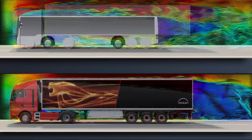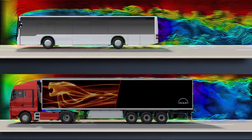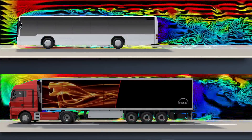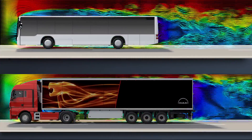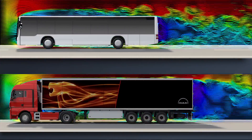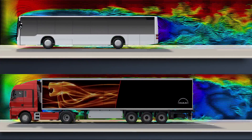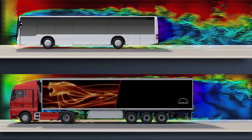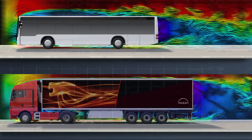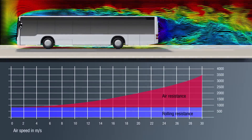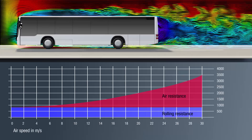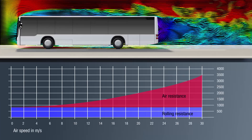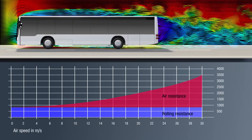The greater the speed, the greater the air resistance. Doubling the speed results in a four-fold increase in air resistance. Thus, at a speed of 85 km per hour, 40% of the overall resistance is already generated through air resistance alone.